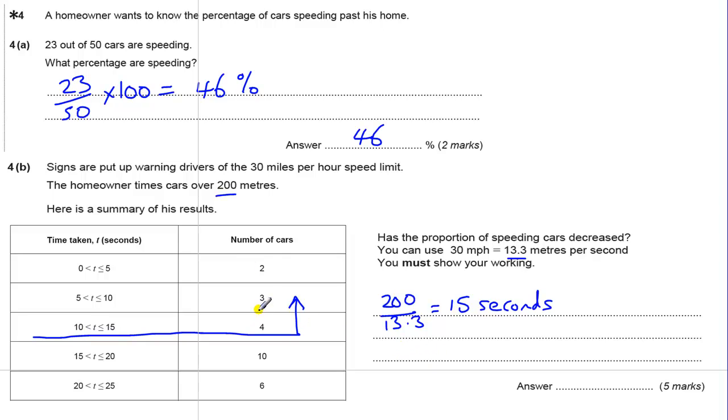So there are 9 speeders out of a total of 25 people. Because you add all these people up, there's 25 of them. That's the proportion of people speeding. Let's change that to a percentage so we can compare it with the 46 above. We times by 100, and that gives us 36%.